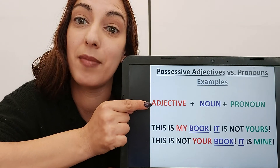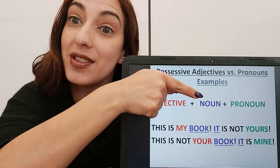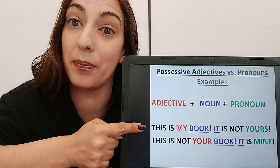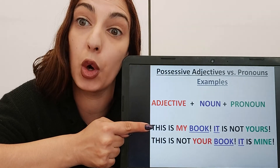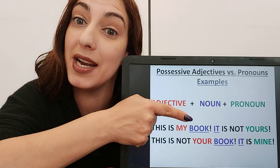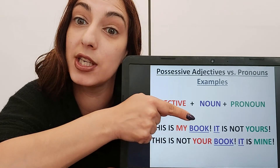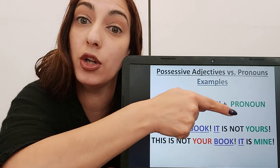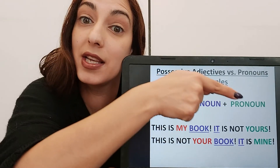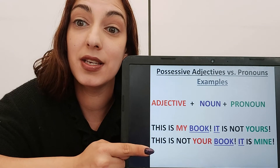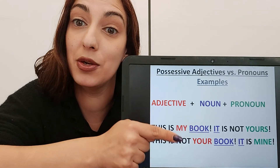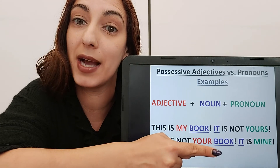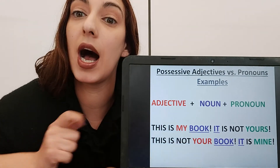Now, here I have my adjective and here I have my pronoun, and here is the noun in the middle — you can see it very clearly, shown in purple. So: 'This is my book.' 'My' is my adjective and 'book' is my noun. It refers back to the book, so: 'It is not yours' — and there is my pronoun. 'This is not your book' — again, 'your' is the adjective and 'book' is the noun. It refers back to the book, so: 'It is mine.'